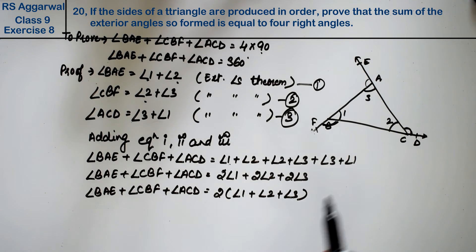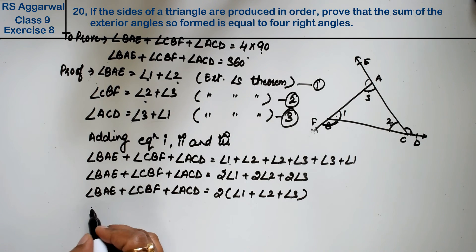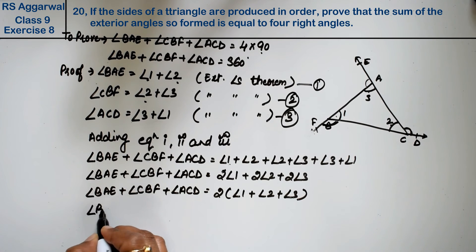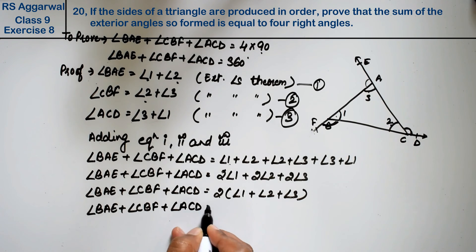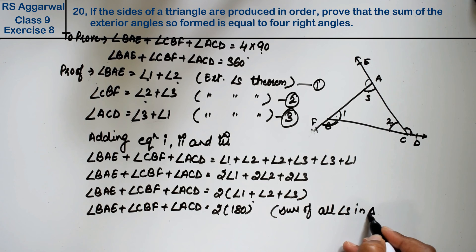Now we know that in the triangle, angle 1 plus angle 2 plus angle 3 equals 180 degrees. Because the sum of all angles in a triangle is 180 degrees.